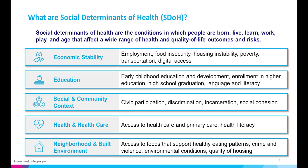A little more about social determinants of health and what they are. Social determinants of health are the conditions in which people are born, live, learn, work, play, and age that affect a wide range of health and quality of life outcomes and risks. Determinants include economic stability, education, social and community context, health and healthcare access, and neighborhood and built environments.